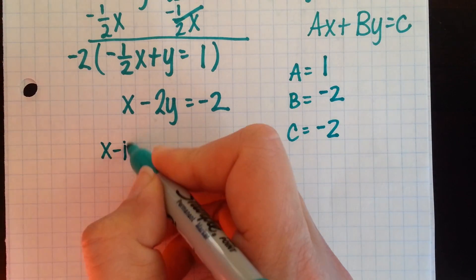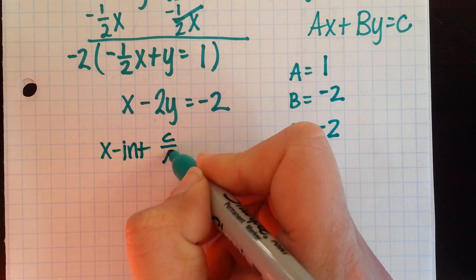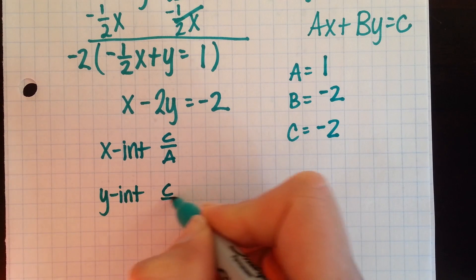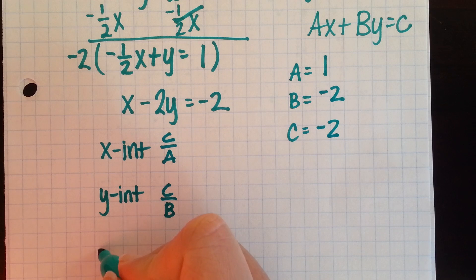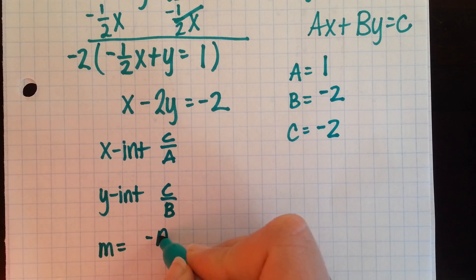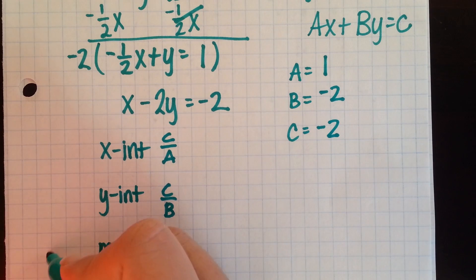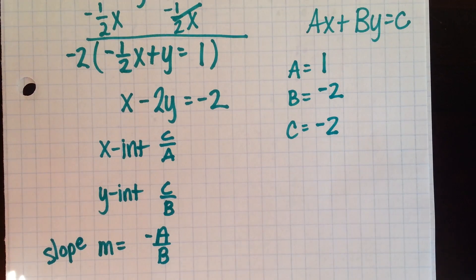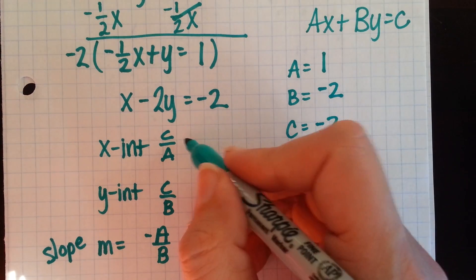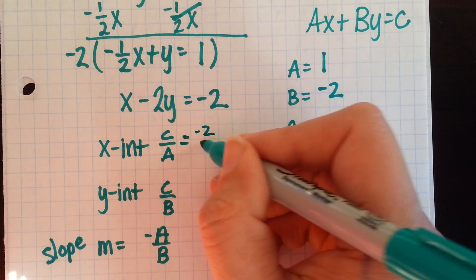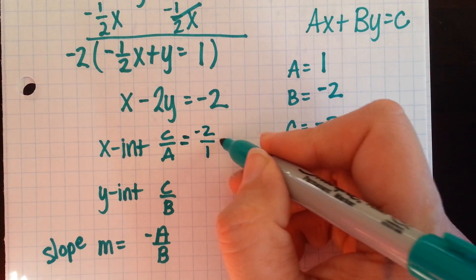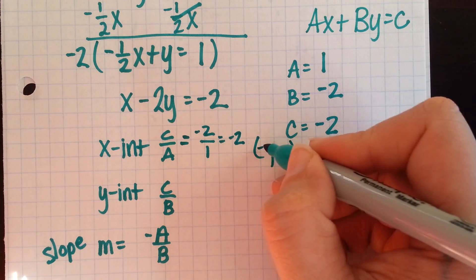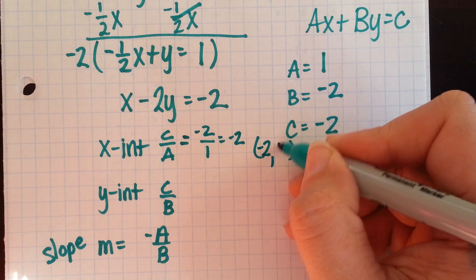So if we wanted to know our x-intercept, we would use the shortcut c over a. To find our y-intercept, we could use our shortcut c over b. And to find our slope, we could use our shortcut negative a over b. Remember, m is our shortcut for slope. So, c over a, that looks like negative 2 over 1, which is negative 2. So as an x-intercept, we would have negative 2, 0.